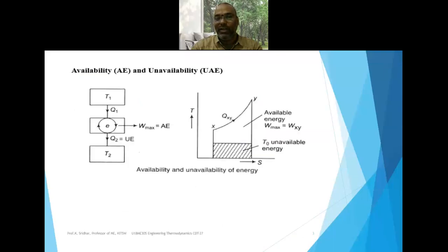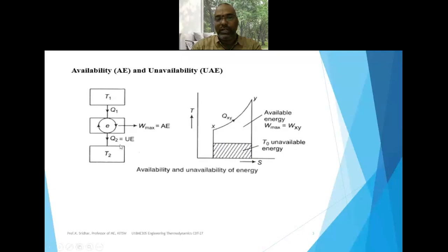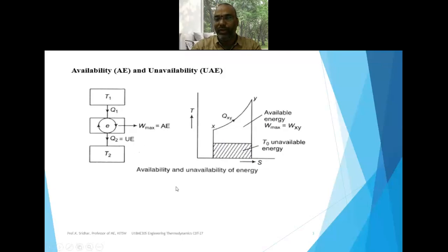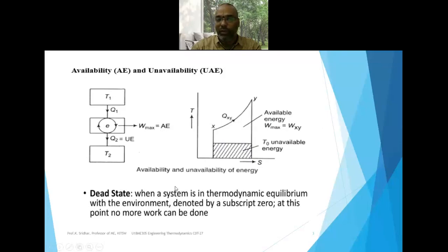In the previous class we defined availability and unavailability. Availability is nothing but the maximum amount of work that can be produced from a heat engine whenever it is reaching the dead state condition. Unavailable energy is how much heat is rejected by the heat engine. The summation of available energy and unavailable energy is the total energy supplied to the system: total energy equals available energy plus unavailable energy.